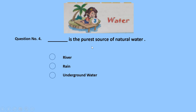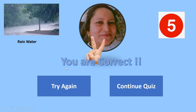Question number 4: this is the purest source of natural water — river, rain, or underground water? Rain is correct! The second option, rainwater, is the correct answer. 5 marks for this option.